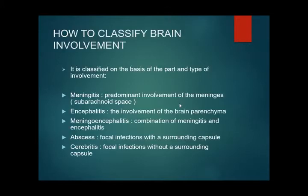First is meningitis, which is predominant involvement of the meninges of the brain. Then there is encephalitis, which primarily involves brain parenchyma. Meningoencephalitis is a combination of meningitis and encephalitis. Brain abscess is a focal infection with surrounding capsule formation, whereas cerebritis is a focal infection without surrounding capsule — cerebritis is the initial state of brain abscess.